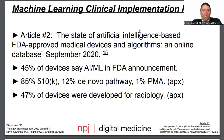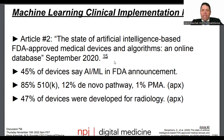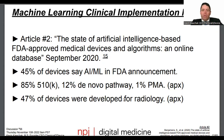The second paper is from 2020, saying 45% of devices include AI or ML in the actual FDA announcement. In 2020, 85% had 510K approvals, 12% de novo pathway, and 1% PMA. Notably, 47% of devices were developed for radiology. The assumption I took with the startup is that radiology — specifically neuroimaging or neuroradiology — combined with QML is a good area.